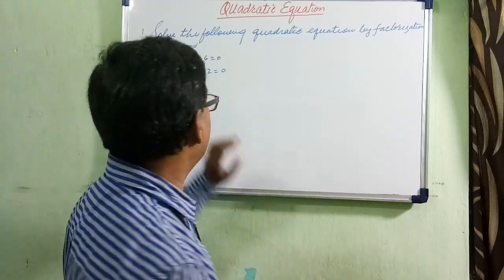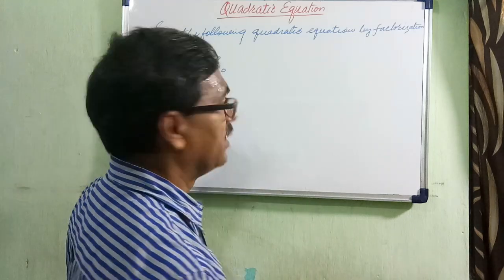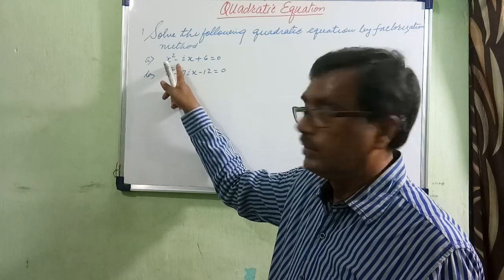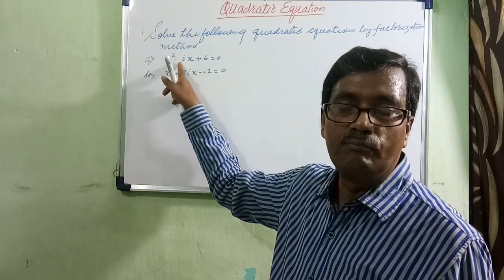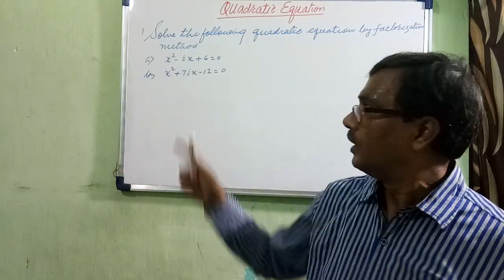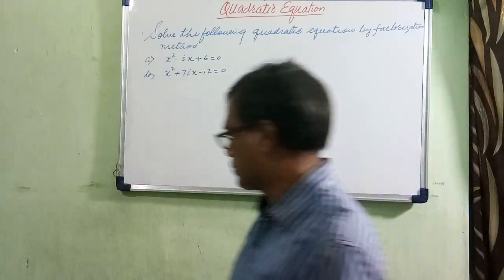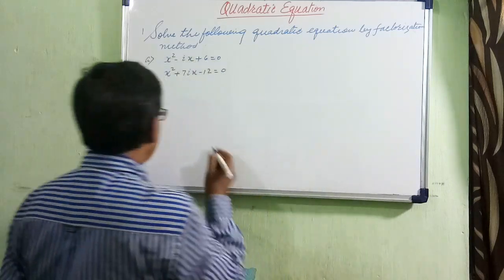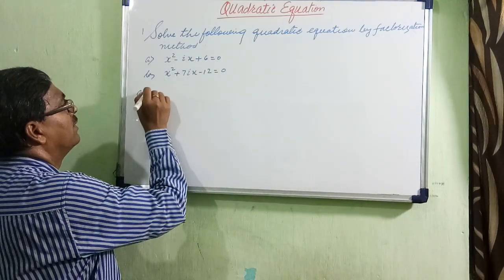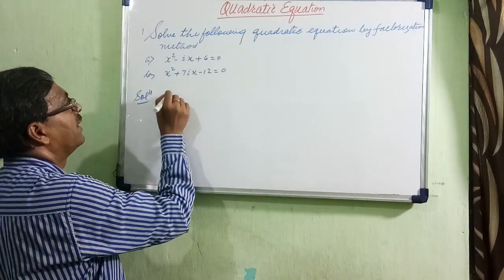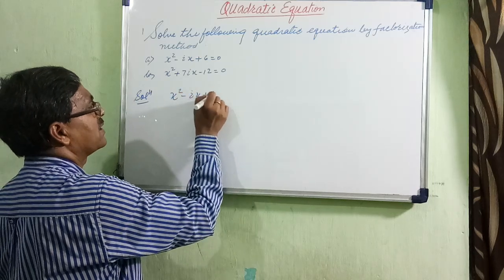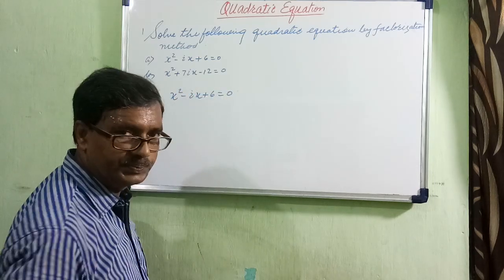In this video, I will discuss a few questions on the middle-term splitting form and factorization method. Let us discuss the first one: x squared minus ix plus 6 is equal to 0.